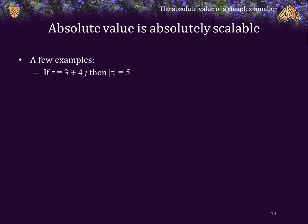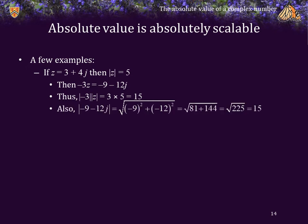A few examples. If z is equal to 3 plus 4j, then the absolute value of z is equal to 5. Then, negative 3 times z is equal to negative 9 minus 12j. We see that the absolute value of negative 3 times the absolute value of z is equal to 15, and if we calculate the other absolute value, we see that it is also equal to 15.